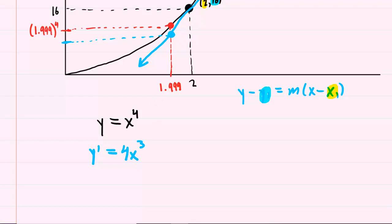Now, to get the slope at the point 2,16, we plug in the x value of that point. We plug in 2. So y prime would be 4 times 2 cubed. 2 cubed is 8, and 8 times 4 is 32. So this becomes the slope of our blue tangent line.